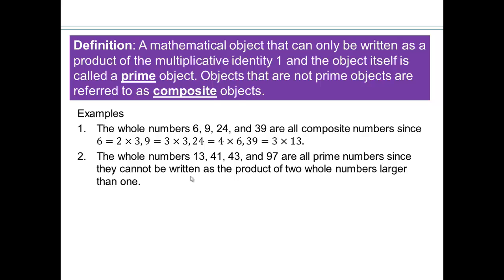Whole numbers like 13, 7, 41, 43, these are all prime numbers because we cannot write them as product of 2 whole numbers larger than 1. 13 can be only written as 1 times 13, so it's a prime number.